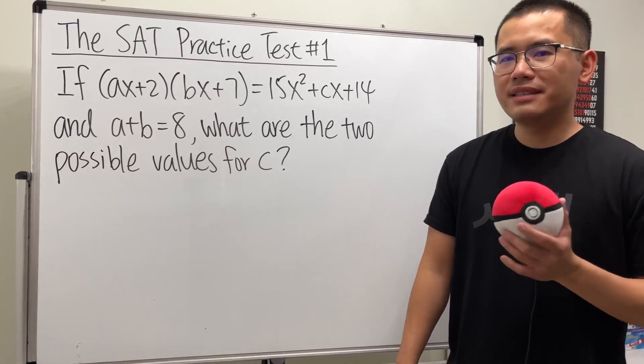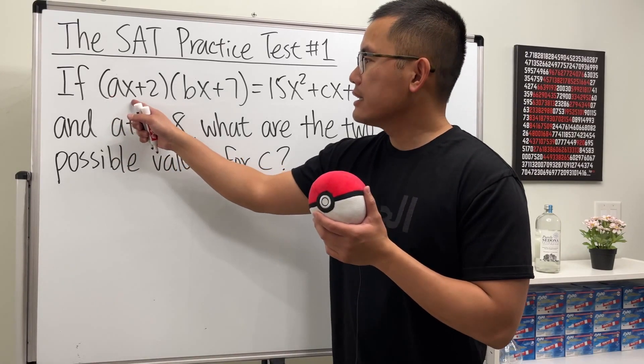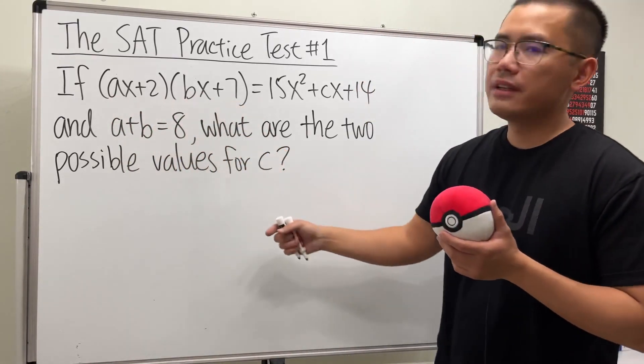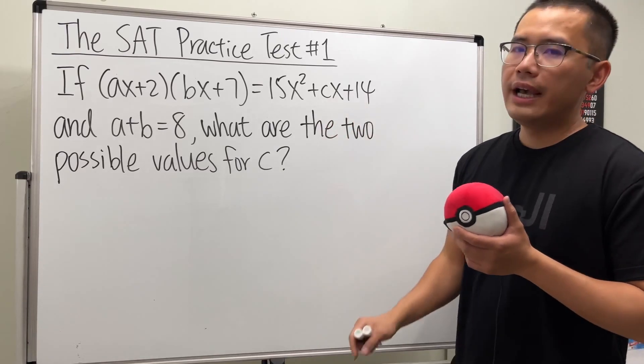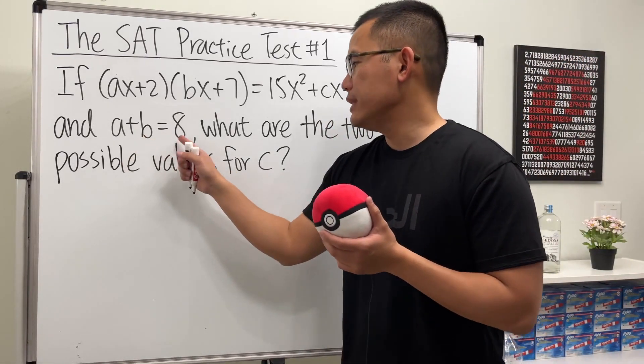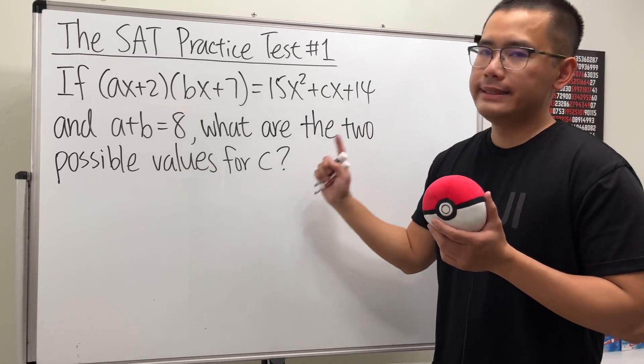All right, this is a pretty tricky SAT algebra question. Let's have a look. We are given that (ax+2)(bx+7) is equal to 15x² + cx + 14. And we also know that a+b is equal to 8. And we are trying to find out what are the two possible values for c.